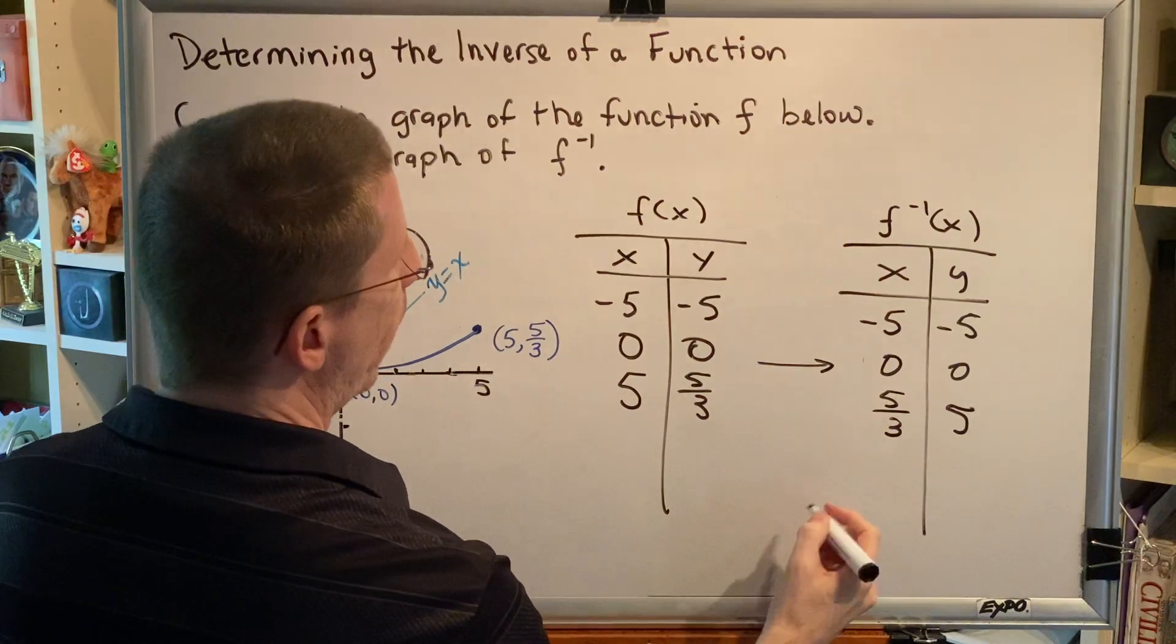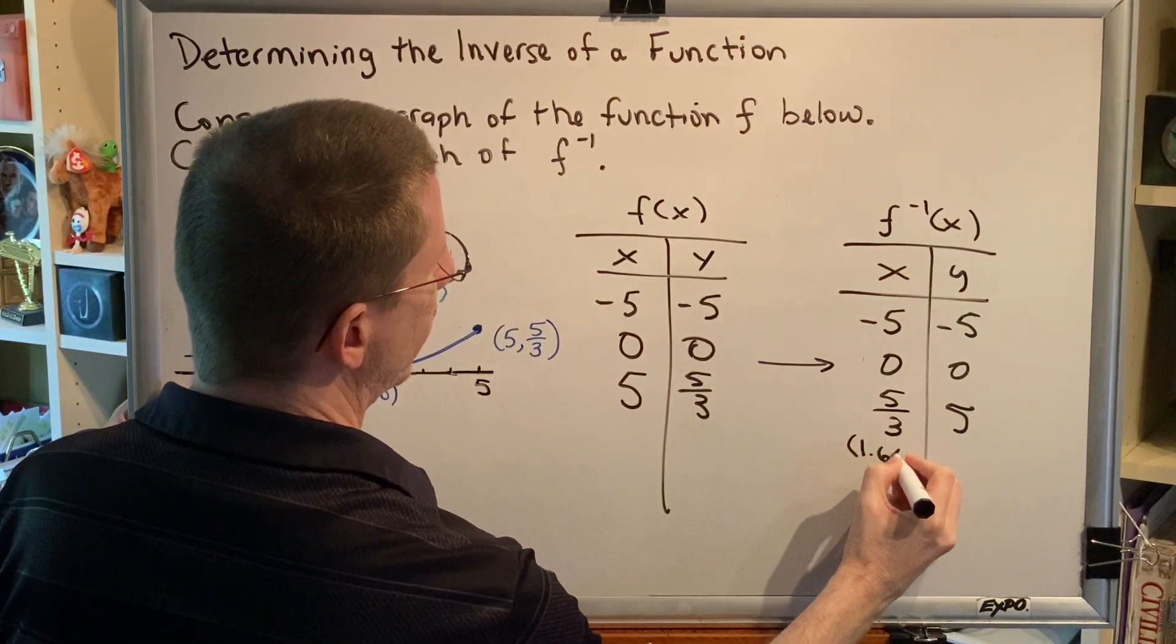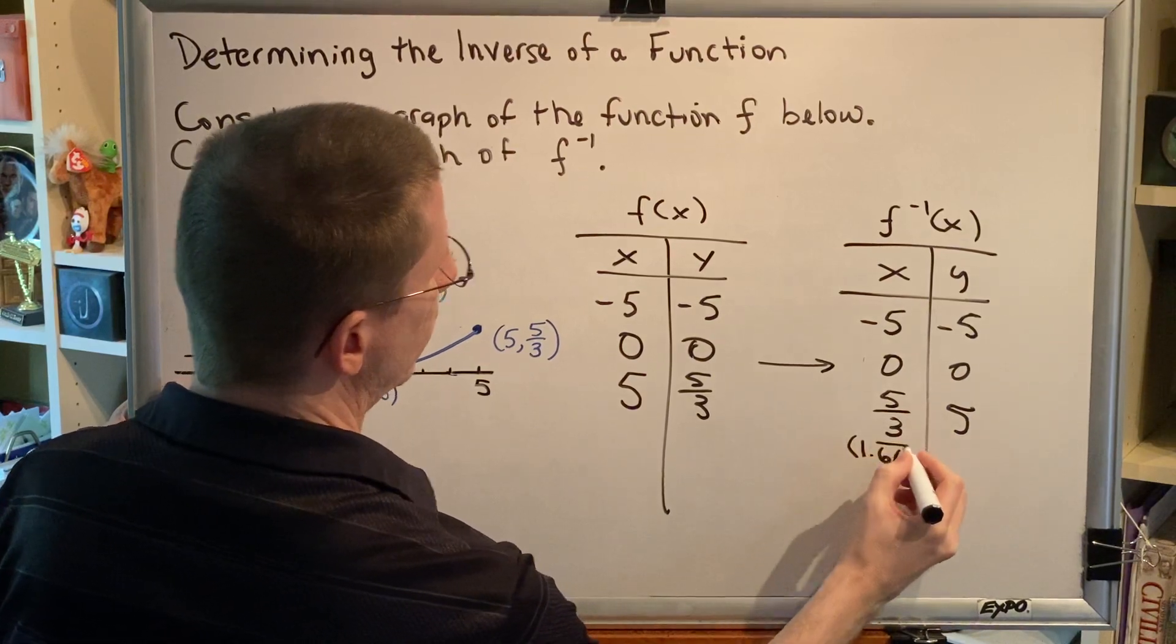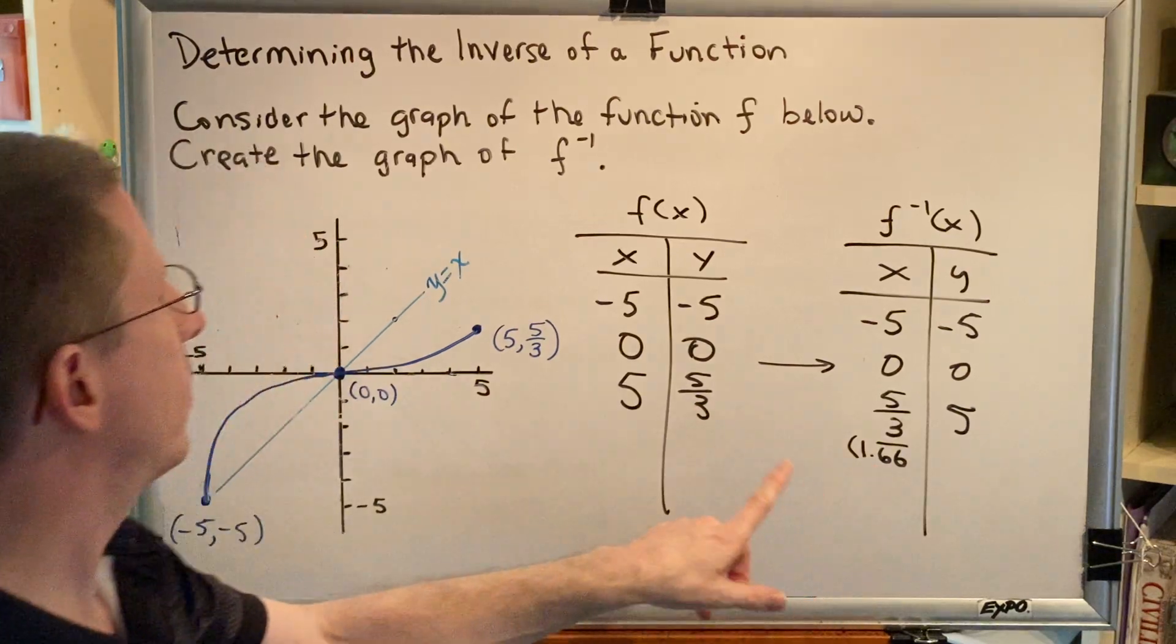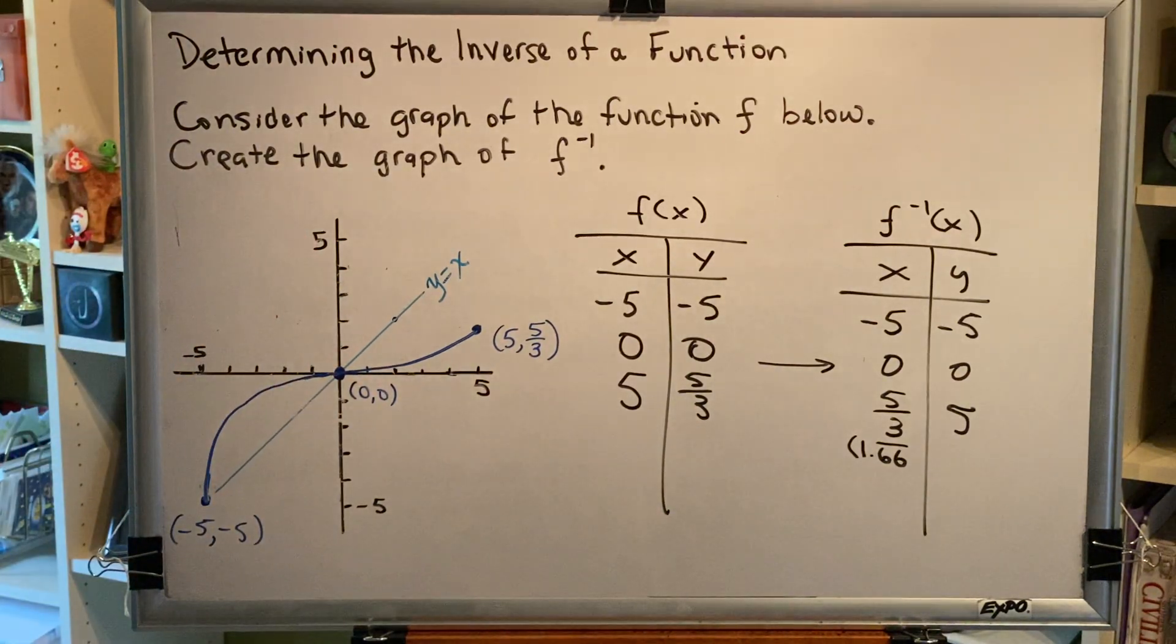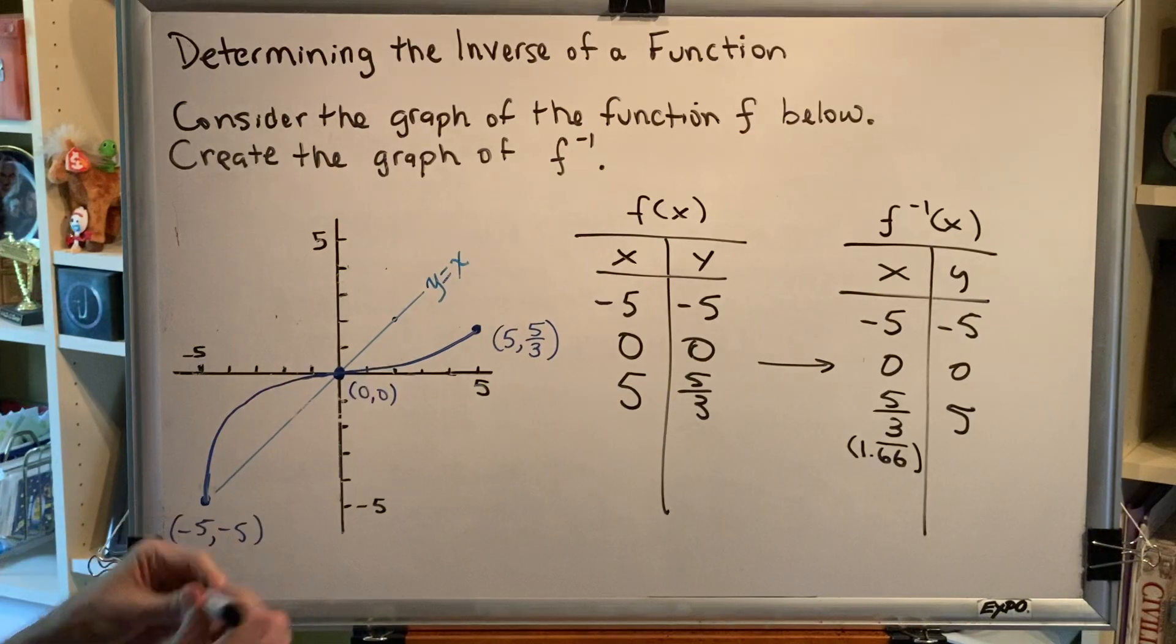If you put 5 divided by 3 in a calculator, you get 1.66666. The sixes repeat and go forever. So one thing I could write here is 1.66 with a little bar over the sixes. That's approximately 1.67, and that's going to be helpful to us in creating our ordered pairs for our graph.